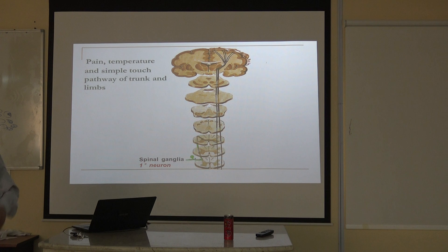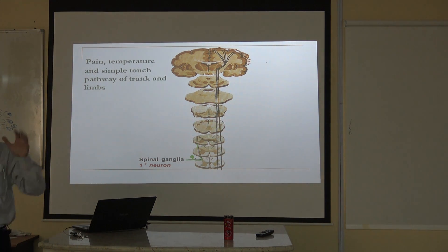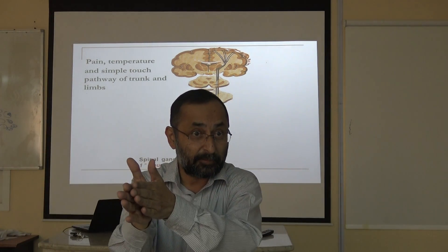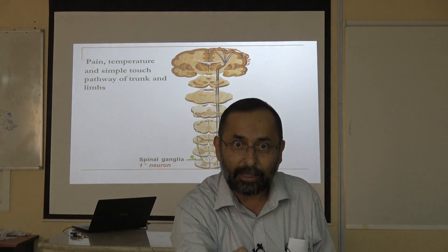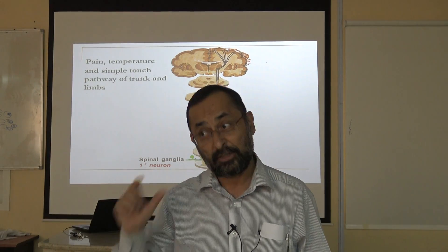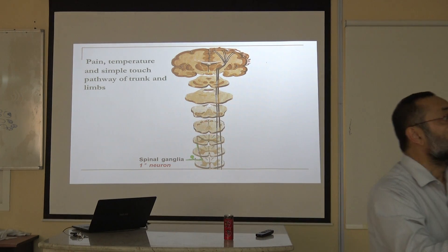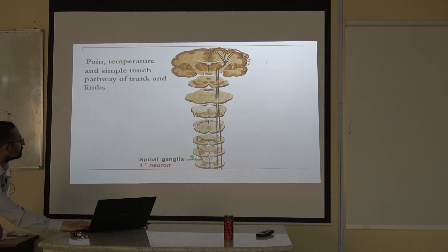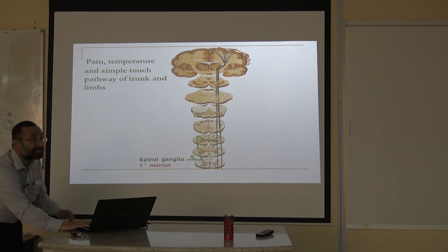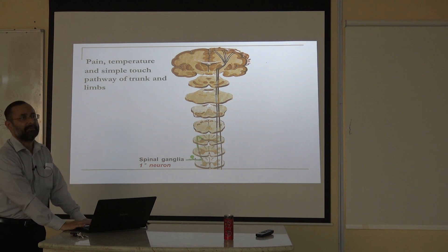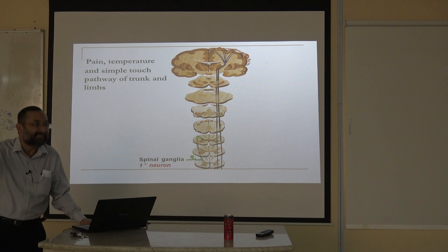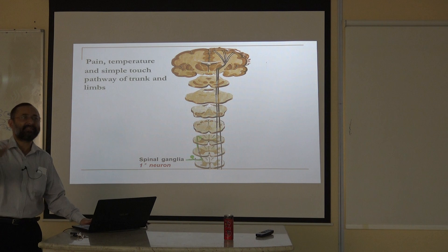When the fibers enter the spinal cord, they can go a little up, a little down, or stay at the same level before crossing and synapsingafter. They will synapse on the same side before crossing. The level of synapse is not fixed — it could be one or two segments up, one or two down, or at the same segment.